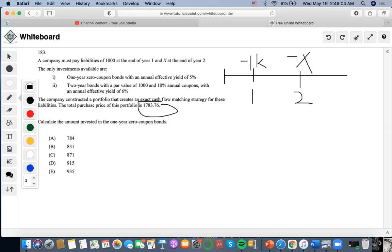So what portfolio are we actually talking about? We're talking about the portfolio of the investments, right? So what we're going to do is that we're going to set up an equation to set the portfolio equal to the total purchase price. We need to find out the amount invested in the one year zero coupon bond. We're going to set the purchase price of this portfolio equal to what's happening here.